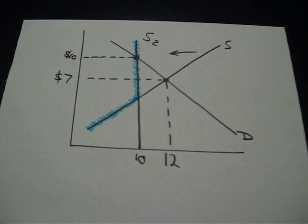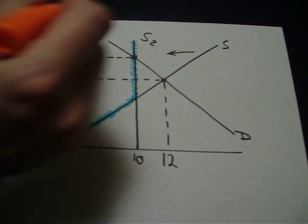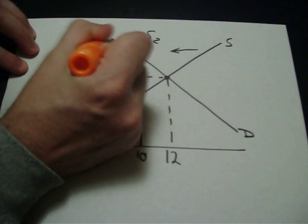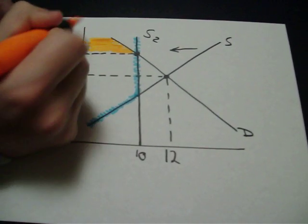So this area, again, below the demand curve, but above the equilibrium price represents your consumer surplus.